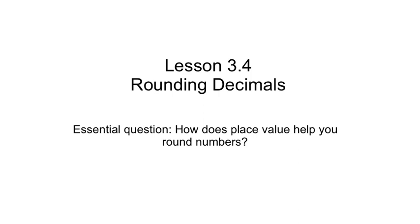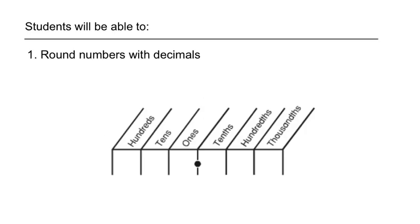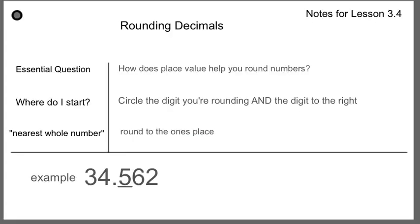We're going to be naming place values and rounding numbers to certain place values. If the lesson seems difficult for you, it's probably because you haven't spent enough time memorizing the place value names. I would suggest getting yourself a place value chart before you begin. At the end of this lesson, you should be able to round numbers with decimals. I'm going to show you the process for doing that, but first we have some notes. Take a moment and write down the notes for the lesson.